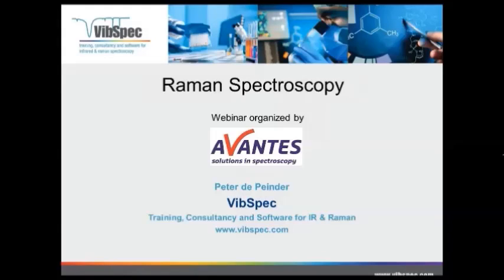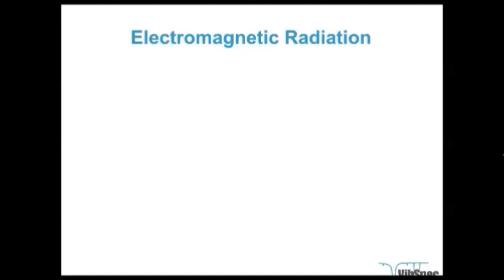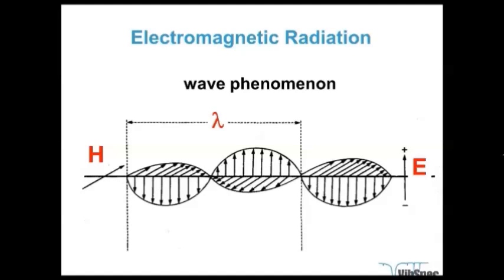Thank you for the introduction. I will start this session with a discussion on vibrational spectroscopy, and in particular Raman spectroscopy. As we should know, we are working with light, which is an electromagnetic radiation and has to be dealt with as a wave phenomenon. Each wavelength has a particular frequency and an electrical field alternating from negative to positive. The wavelength is related to this frequency by the correlation to the speed of light, C.